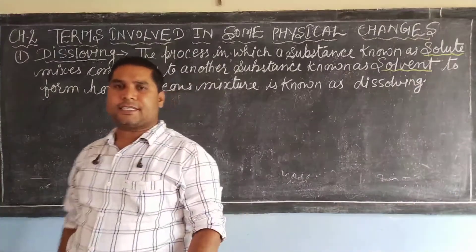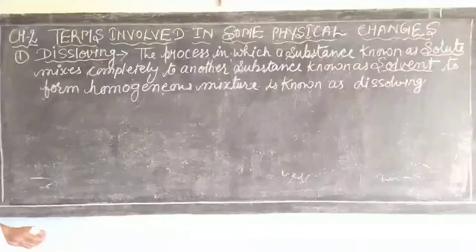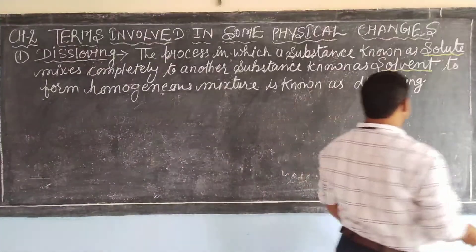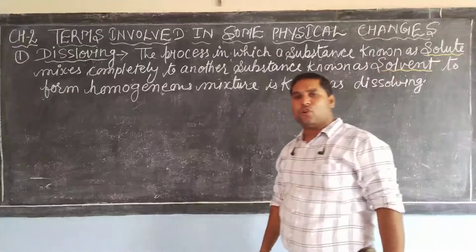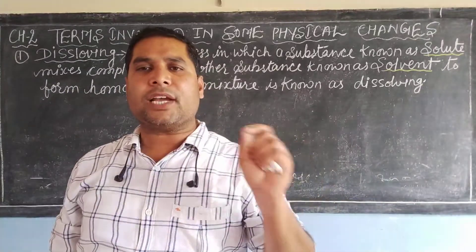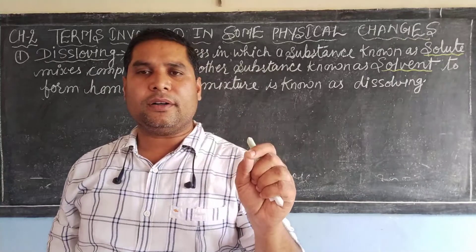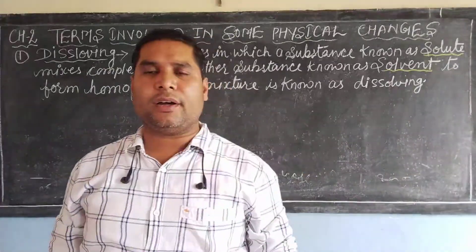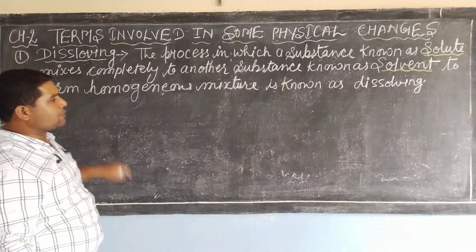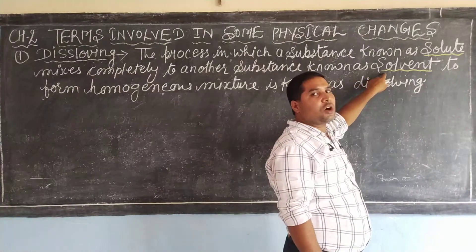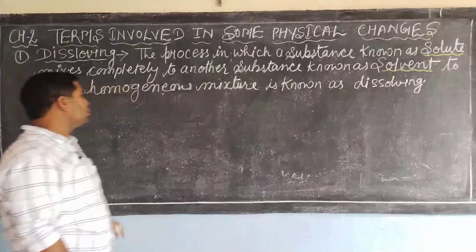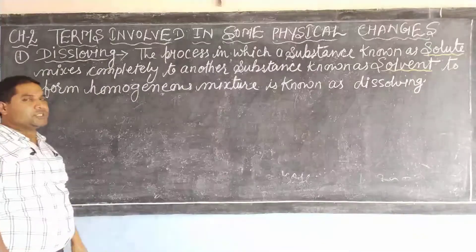So, let us understand what you mean by dissolving. The process in which a substance known as solute — solute means a solid substance which you dissolve in a liquid — mixes completely to another substance known as a solvent, the liquid medium like water, to form a homogeneous mixture is known as dissolving.